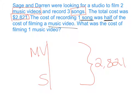If I draw a music video bar and divide it in half, one of those halves is equal to a song. Let's read that sentence again to make sure the bar model matches: one song is equal to half of the cost of filming a music video. Does that look right? The song is half of a music video — it does.